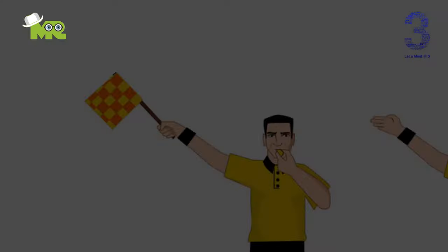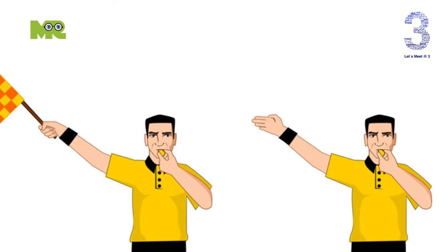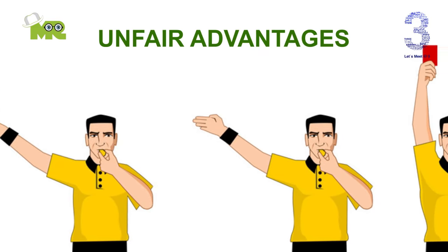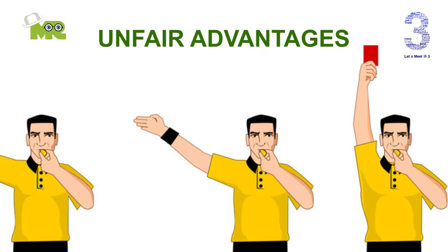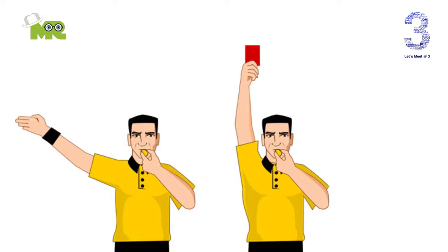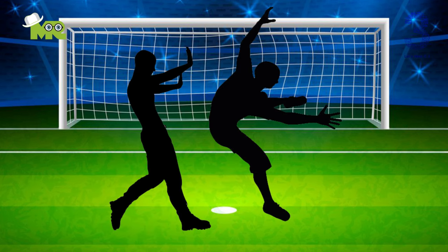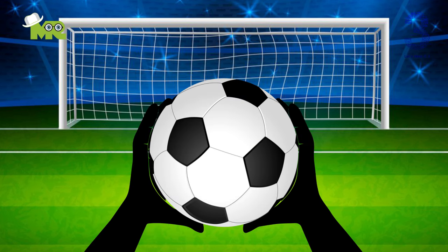Soccer fouls can be any number of unfair advantages taken by a player that are called by the referee. These can include tripping, pushing, and touching the ball with the hands.